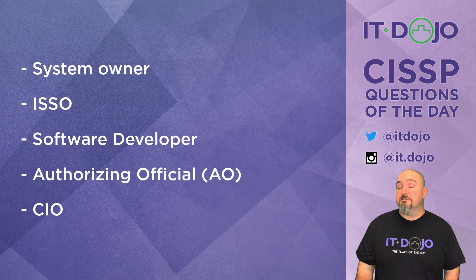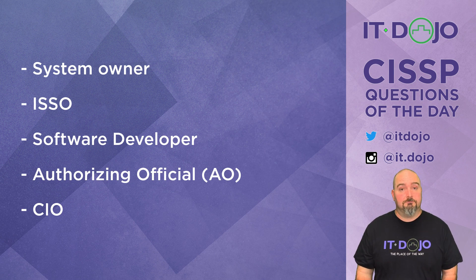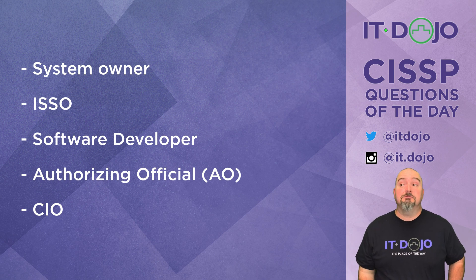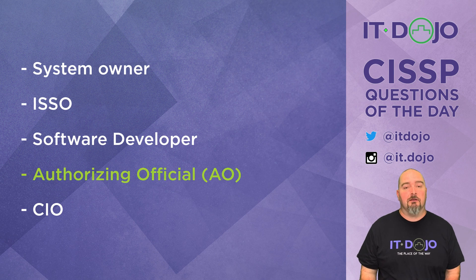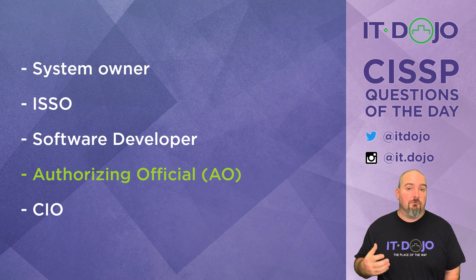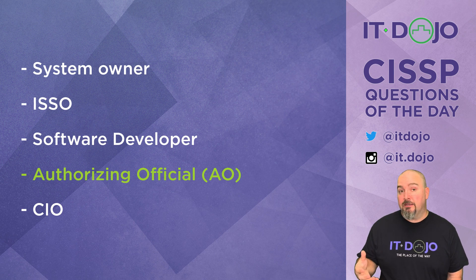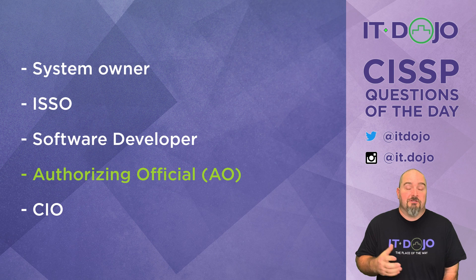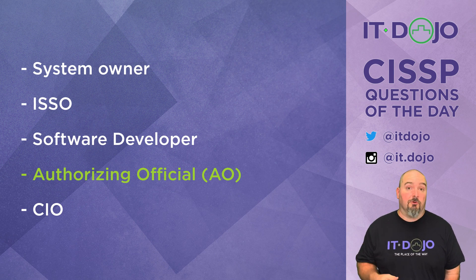The software developer is not the answer either. The next choice is the authorizing official — and yes, that's the right answer. The AO, or authorizing official, is the person who has the authority within the organization to formally accept the risk associated with operating a system in the environment. That is almost the textbook definition of what an AO's job is.